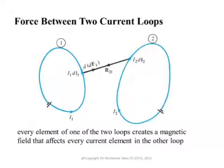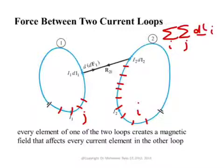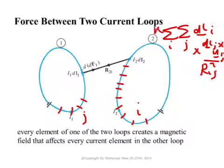To summarize: given any two arbitrary loops, divide the first loop into small elements indexed i and the second loop into small elements indexed j. Then carry out a double summation over all i and all j of dli cross (dlj cross aij) divided by rij squared, multiplied by the constant mu-naught * I1 * I2 / (4 pi). This can be done numerically quite easily; analytically it is more difficult unless the geometry allows the integrals to be carried out in closed form.